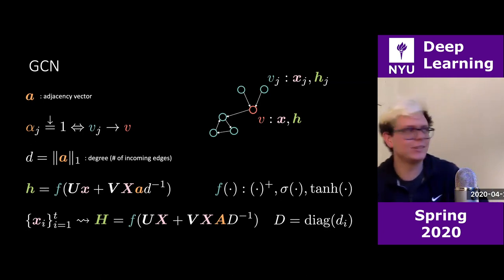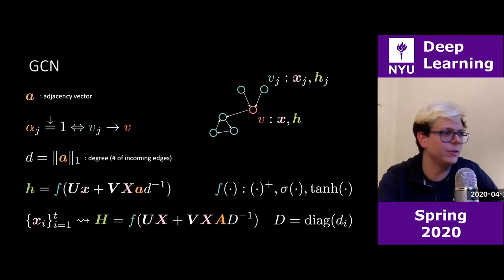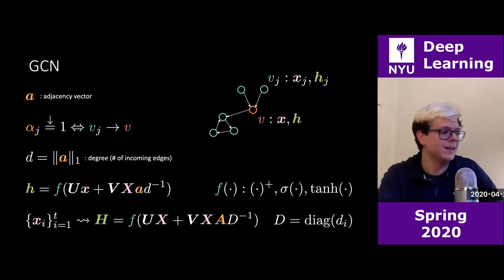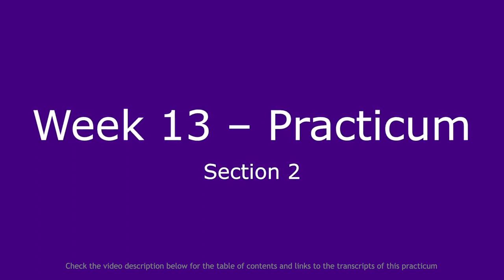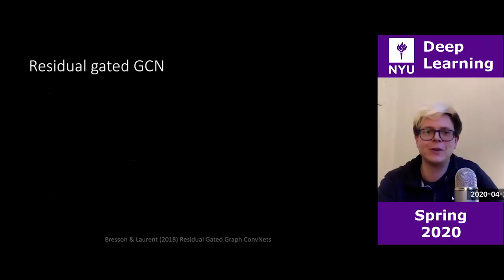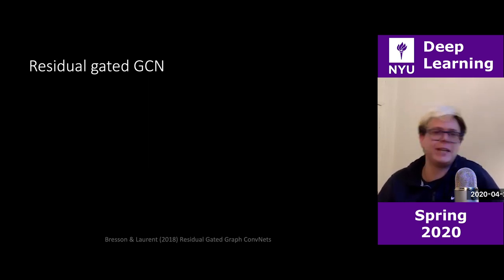We are going to check the code now so you can understand everything that is going on. The only new part is the type of graph convolutional network we are implementing: the residual gated graph convolutional network — quite a mouthful. It's from Bresson and Laurent — see the reference below.